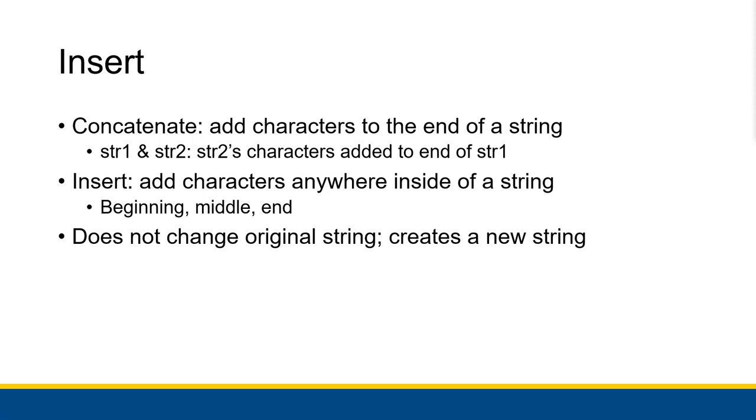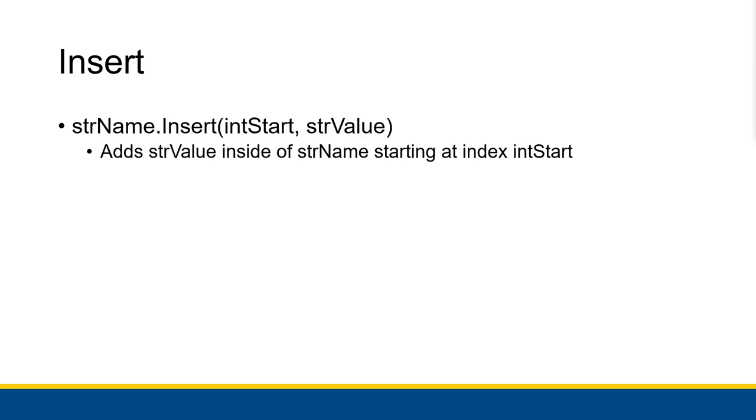So if we have, if we are inserting string two in the middle of string one, string one and string two don't change, we make some string three that has all string one's characters, but all string two's characters are somewhere in the middle, in between the first half of string ones and the second half of string ones, or something like that. So the method we are talking about here is the dot insert method of a string, where you put in the starting index of where you want the new string that you're inserting to go, and then the string itself. Now the starting index is essentially where the first character of string value is going to be in this new string.